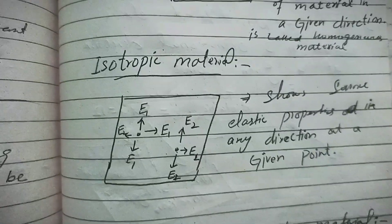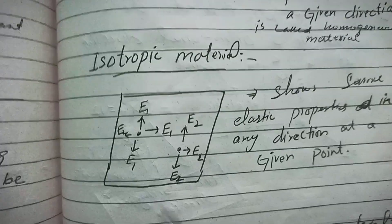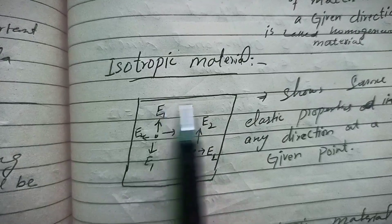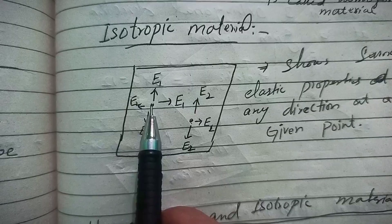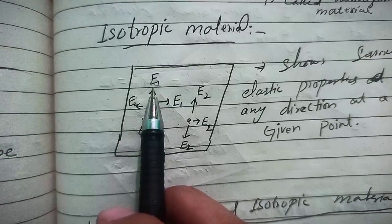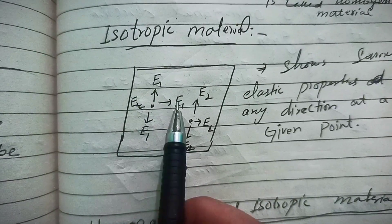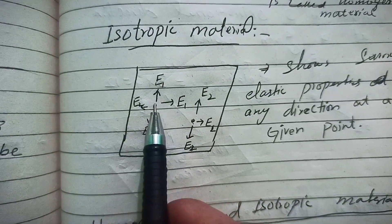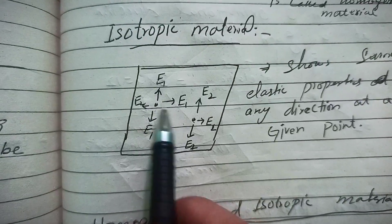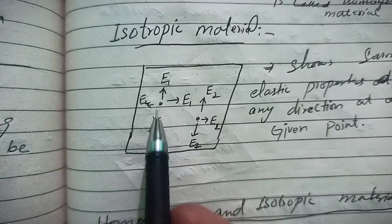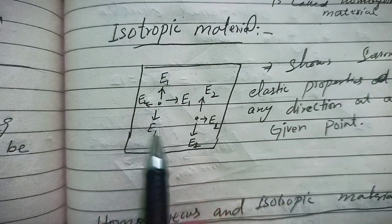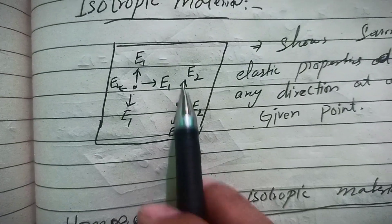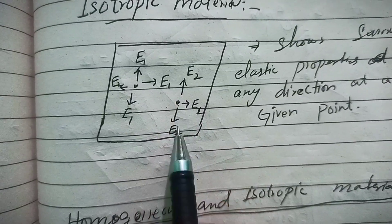Now let's move to isotropic material. For an isotropic material, at a given point the elastic property in any direction is the same — say E1 in this direction, E1 in this direction, E1 in any direction. If we move to the next point, the elastic property in every direction at that point is E2.